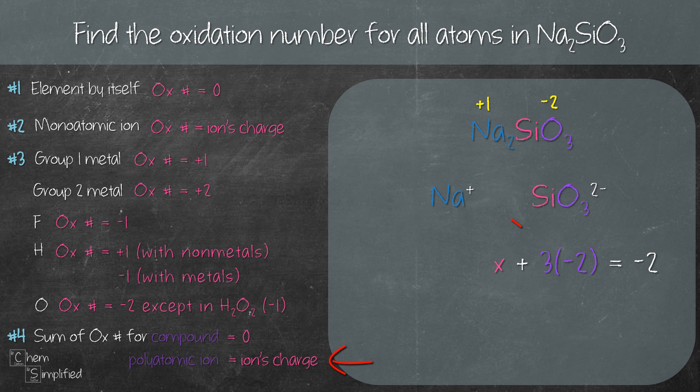The reason we have 3 in front is because we have 3 oxygen and we times 2 because negative 2 is the oxidation number for oxygen and the whole thing we add it up and we equate it to negative 2 because that is the charge for our silicate ion. Solving that is gonna give us X is plus 4 which means the oxidation number for Si is plus 4.